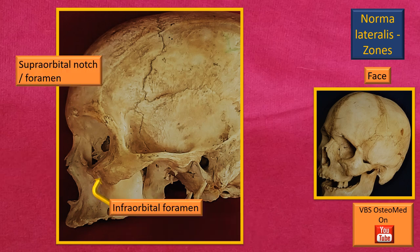To complete the features: along the supraorbital margin is the supraorbital notch, or more often a foramen. Likewise, on the floor just below the inferior orbital margin on the maxilla is the infraorbital foramen.